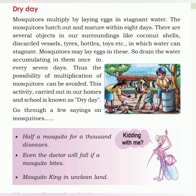One more easy and simple way to avoid multiplication of mosquitoes is observing dry day. Mosquitoes multiply by laying eggs in stagnant water, and it takes eight days for the eggs to hatch and grow fully. There are many objects in our surroundings — like coconut shells, discarded vessels, tires, and bottles — where water can stagnate, giving mosquitoes a chance to lay eggs. So drain the water accumulating in these objects once every seven days. This activity carried out in our homes and schools is known as dry day.